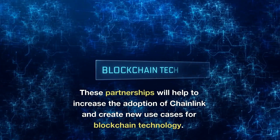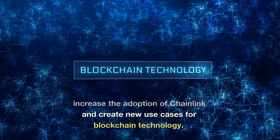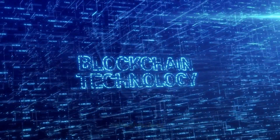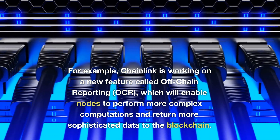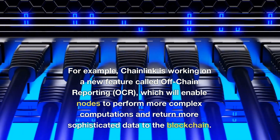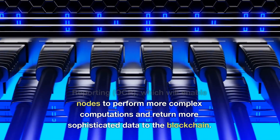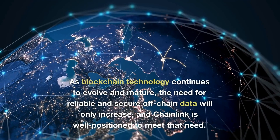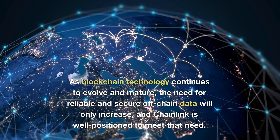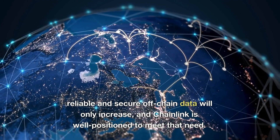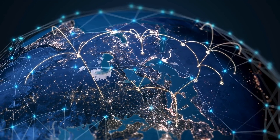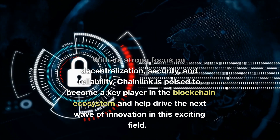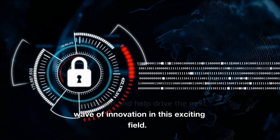These partnerships will help to increase the adoption of Chainlink and create new use cases for blockchain technology. In addition, Chainlink is also working on new features and improvements to its technology. For example, Chainlink is working on a new feature called off-chain reporting, which will enable nodes to perform more complex computations and return more sophisticated data to the blockchain. The future looks very bright for Chainlink. As blockchain technology continues to evolve and mature, the need for reliable and secure off-chain data will only increase, and Chainlink is well-positioned to meet that need. With its strong focus on decentralization, security, and reliability, Chainlink is poised to become a key player in the blockchain ecosystem and help drive the next wave of innovation.